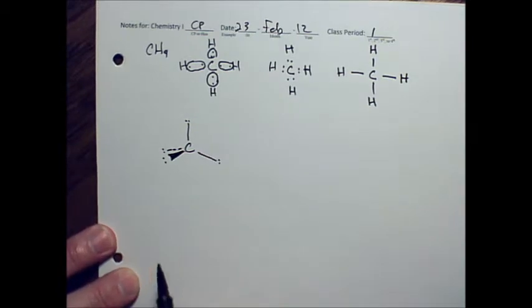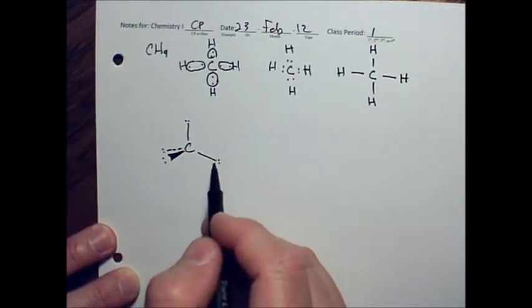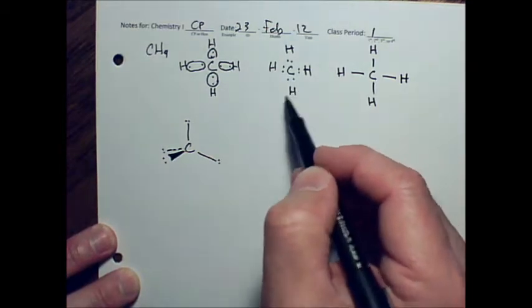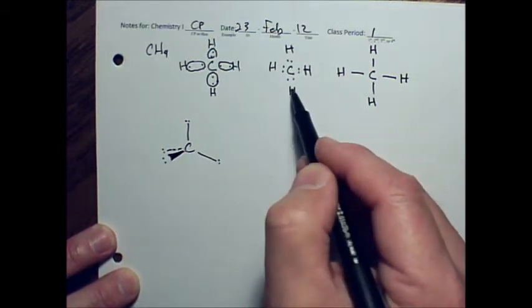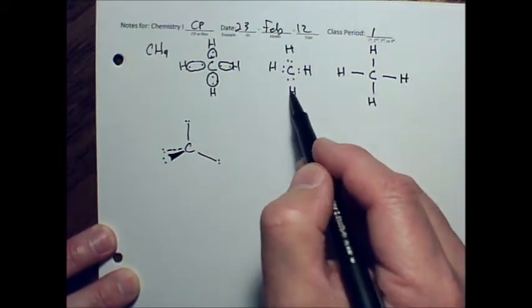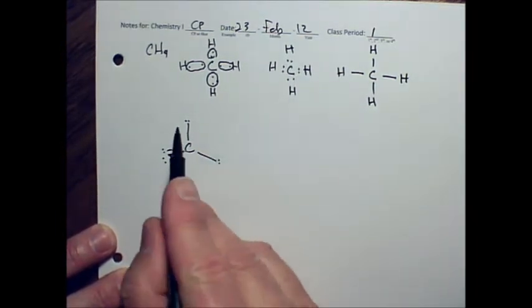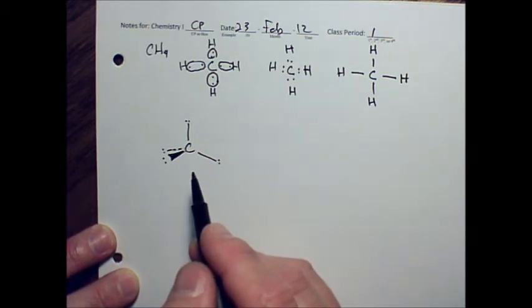And then what we're going to do in the next step is to take this tetrahedral electron pair shape, and we're going to replace any shared pairs of electrons with the elements they are shared with. All four of these are shared with hydrogen, so we're going to replace all four of the sets of electrons.